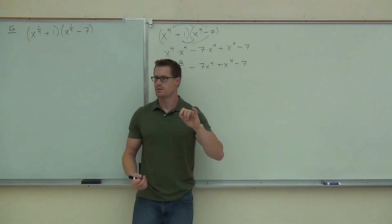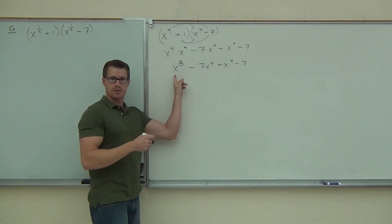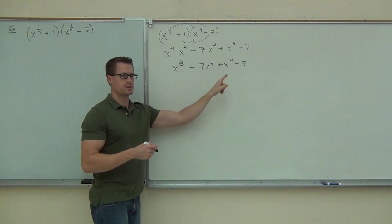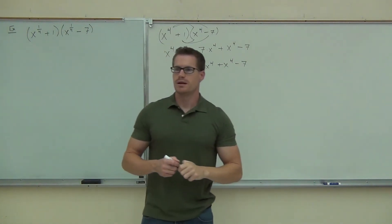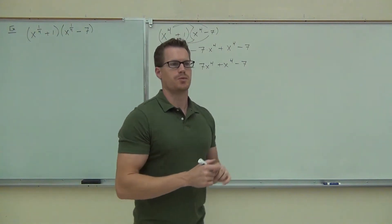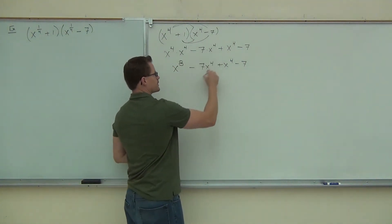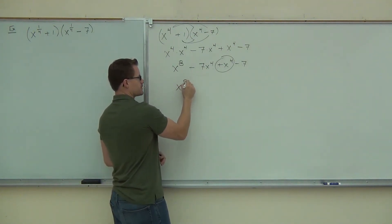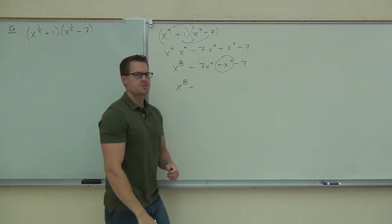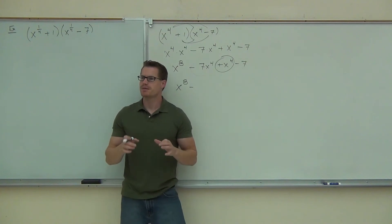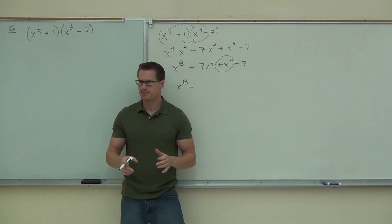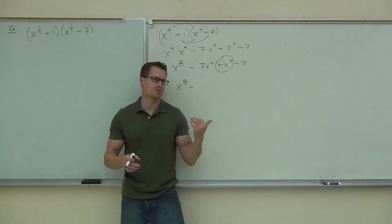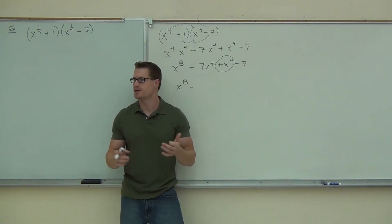X to the fourth — seven x to the fourth and x to the fourth. Now listen, you've got to do this properly. If you're going to combine these two things, which are like terms in the same variable raised to the same power, you've got x to the eighth minus... do me a favor, combine these like terms correctly. If I combine these like terms, I'm just looking at the coefficients. I have minus seven, I have plus one — I'm going to get negative six out of that.